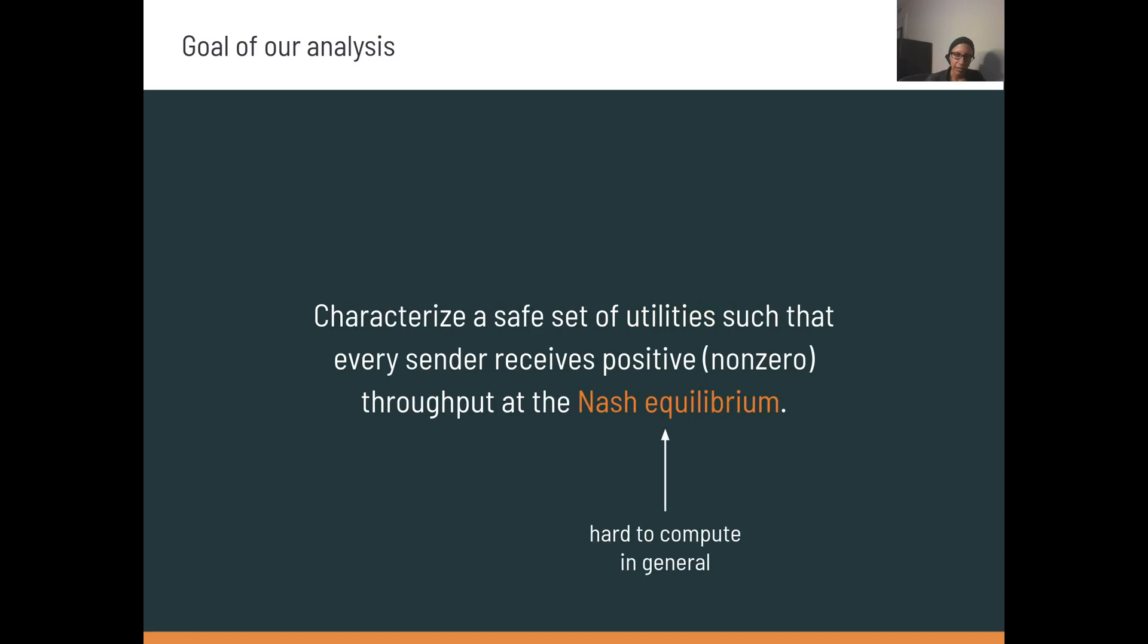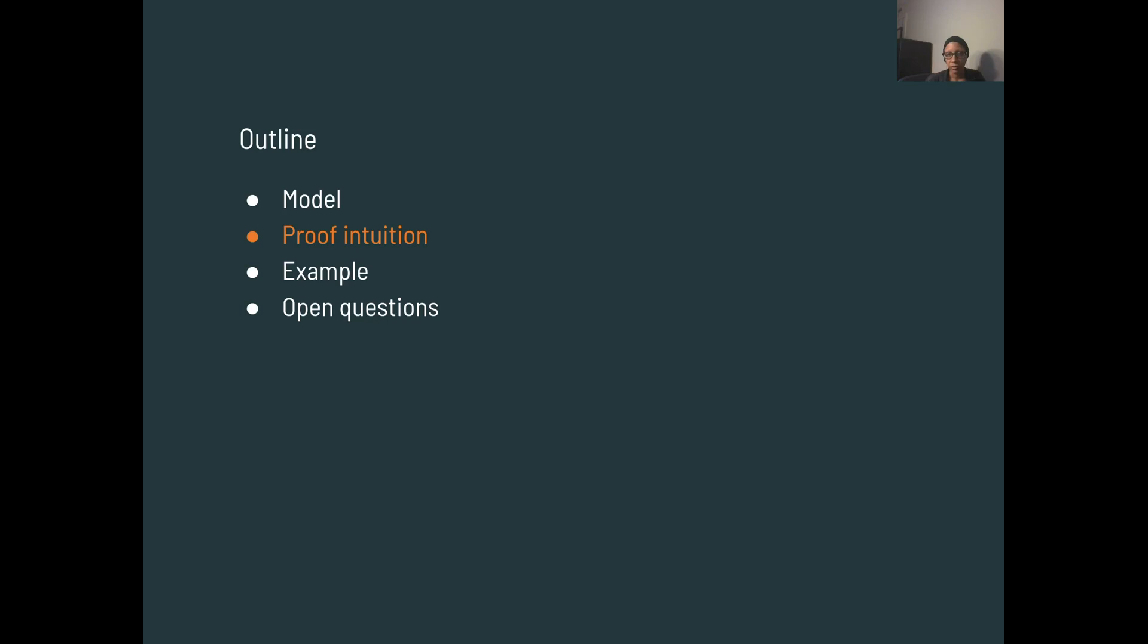Unfortunately, the actual outcomes for each sender at the Nash equilibrium are hard to compute in general. So the main technical contribution of our work is to exploit structure in the game that makes this safety condition easier to compute than the exact Nash equilibrium. The high-level intuition is that we'll compute an upper bound on how delay sensitive a sender can be, given the alpha value of the most aggressive player in the network, or the least delay sensitive player in the network.